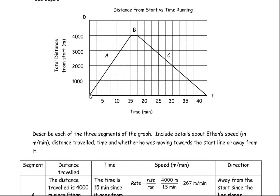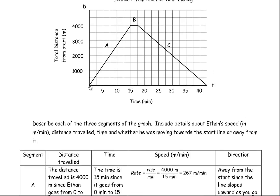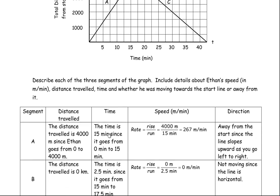So for Line Segment A to go from here up to here, he's traveling from 0 meters to 4,000, so he's traveling 4,000 meters. So the distance traveled is 4,000 meters since he goes from 0 to 4,000. His time would be 15 minutes because this is at 0 time, and this one is above the 15 minutes of time. So his time traveled is 15 minutes.